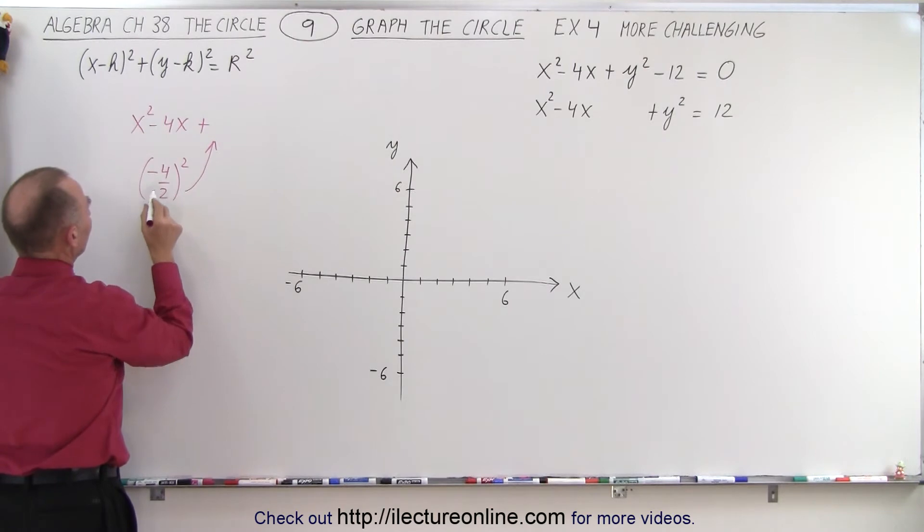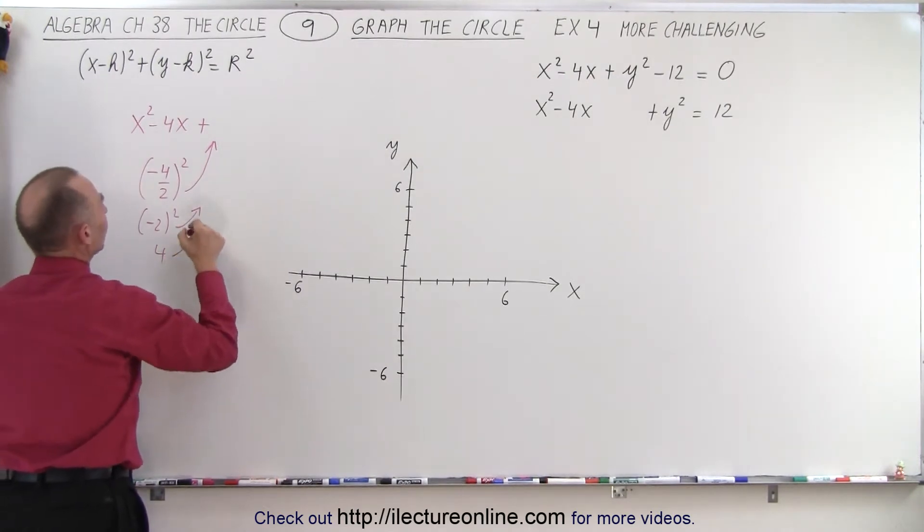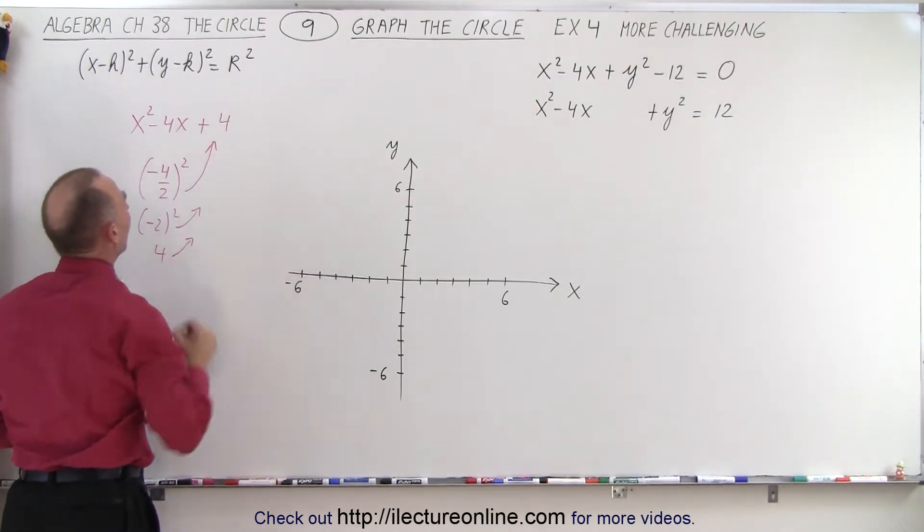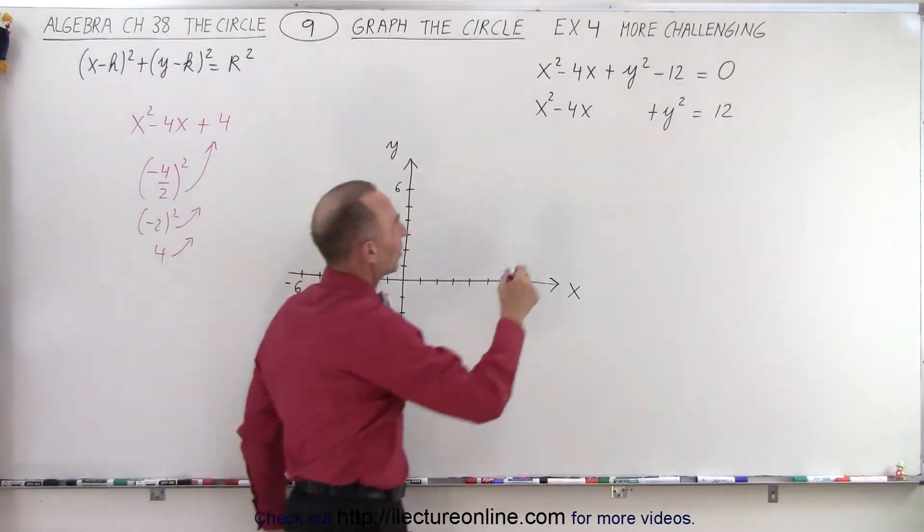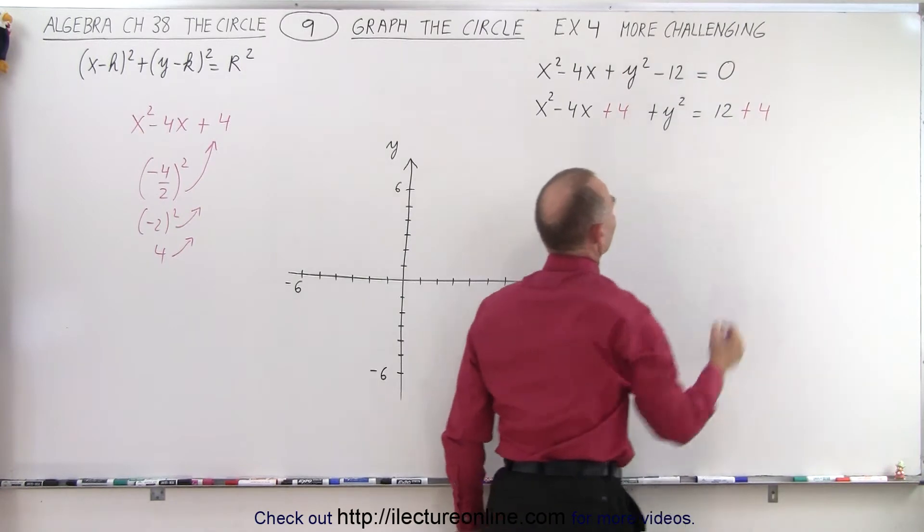When we do that, this is equal to negative 4 divided by 2, which is negative 2 squared. It goes up there, so that ends up being a 4. So this becomes a 4. So that means we need to add a 4 here. And if we add a 4 there, we're going to need to add a 4 on the right side.